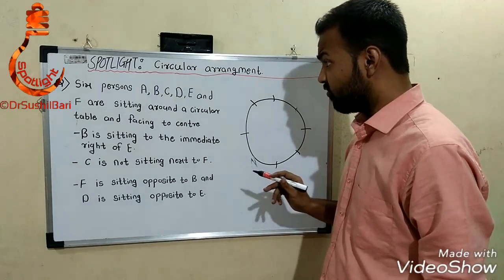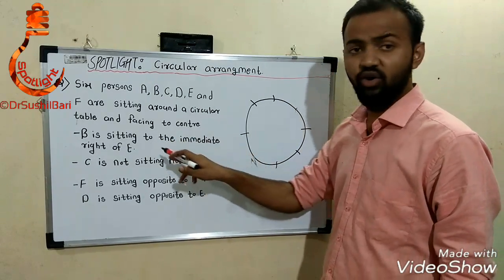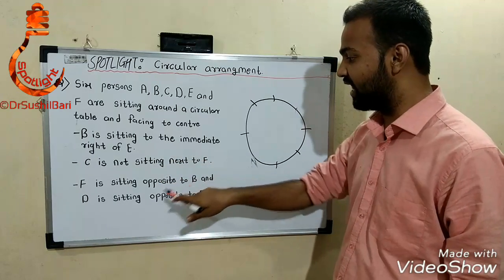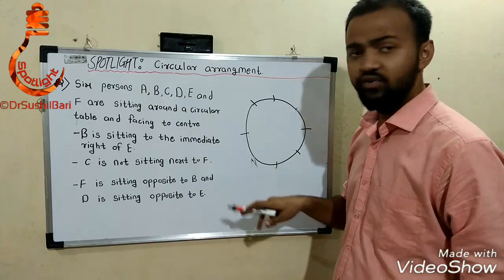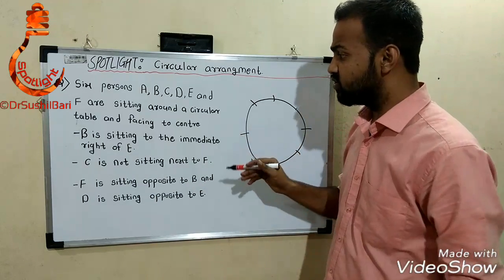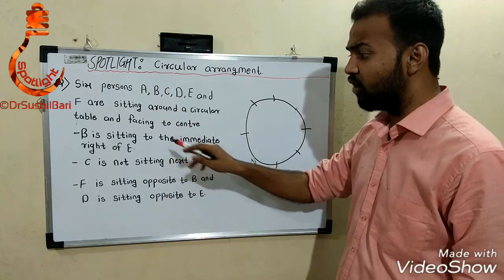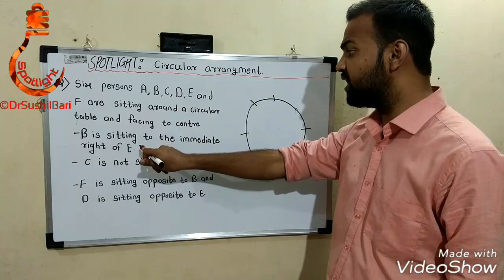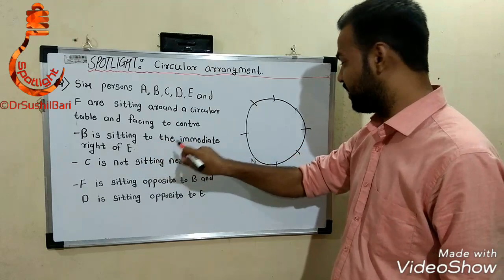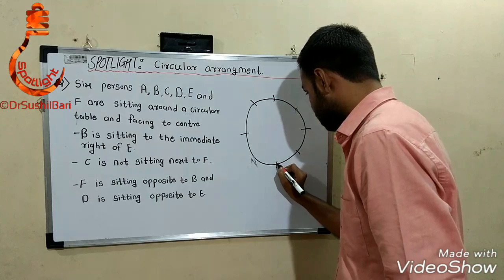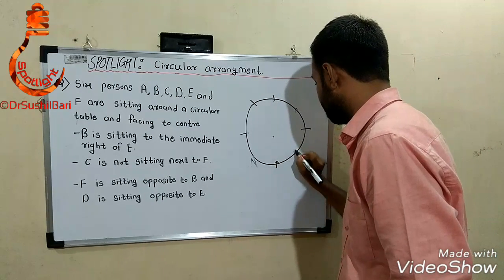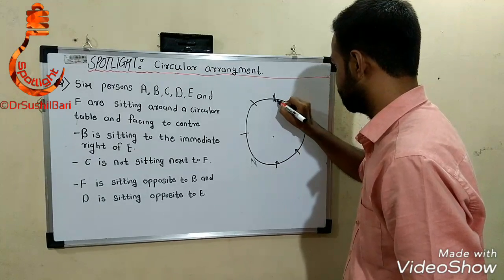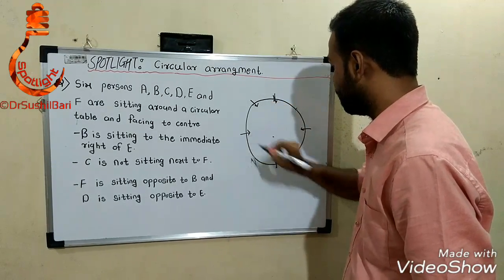Now: B is sitting to the immediate right of E; C is not sitting next to F; F is sitting opposite to B and D; and D is sitting opposite to E. If you analyze these three statements, the first statement has a reference in the third statement, so we can start with the first statement.